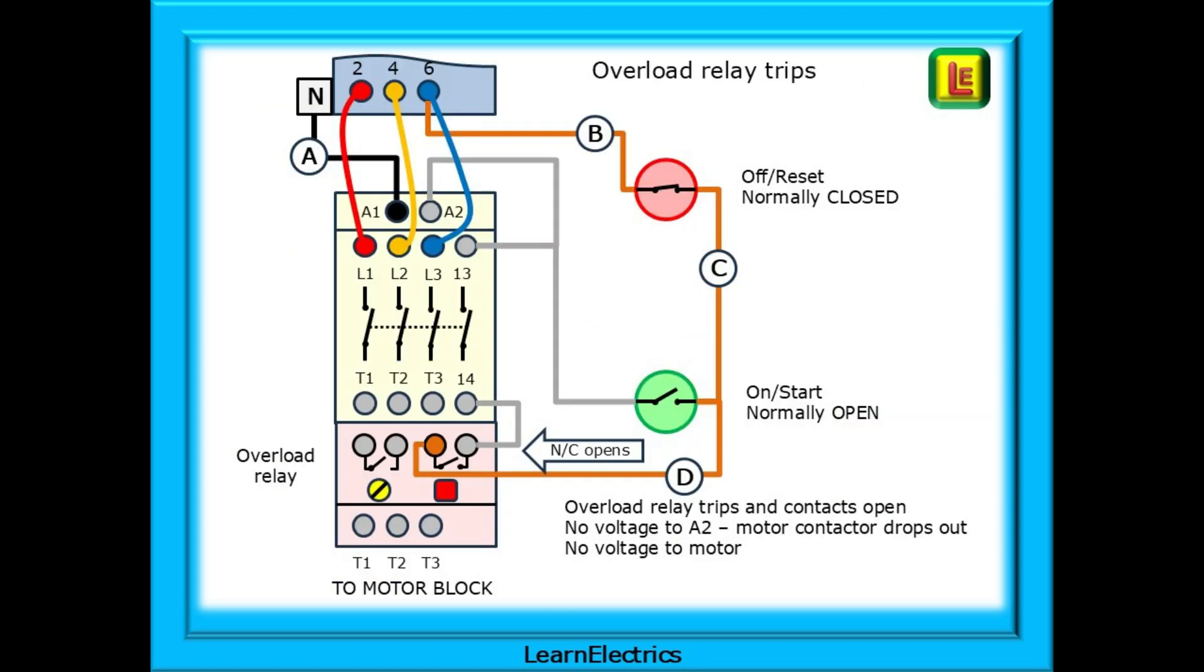This is the control circuit drawing showing the overload relay opening its normally closed contacts. 230 volts can get as far as wire D but no further. Terminal A2 loses its 230 volts and the contactor coil de-energises. The contactor drops out and all its relay contacts return to a state of normally open. The motor has stopped.